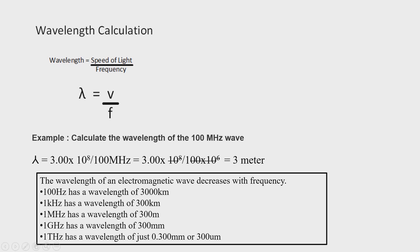As seen in the table, the wavelength of an electromagnetic wave decreases with increase in frequency — there is an inverse proportion between wavelength and frequency. For example, a 100 Hz wave has a wavelength of 3000 km, a 1 kHz wave has 300 km, a 1 MHz wave has 300 m, and a 1 GHz wave has a wavelength of 300 mm.